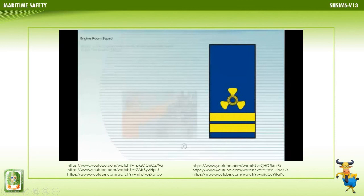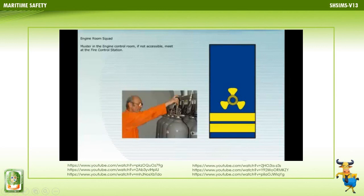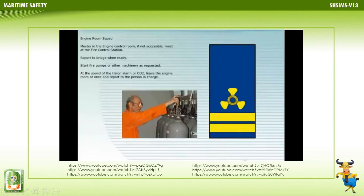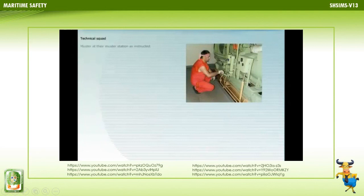Engineers muster in the engine control room; if not accessible, meet at the fire control station. Report to the bridge when ready. Start fire pumps or other machinery as requested. At the sound of the halon or CO2 alarm, leave the engine room at once and report to the person in charge. Stop requested ventilation, close fire flaps, isolate electrical equipment, and start emergency fire pump.